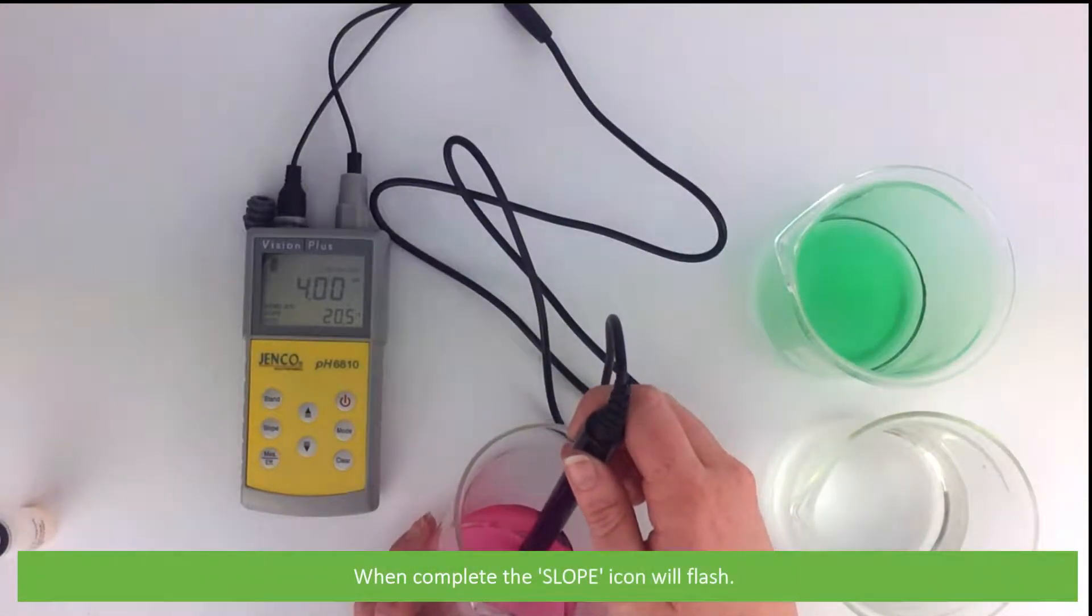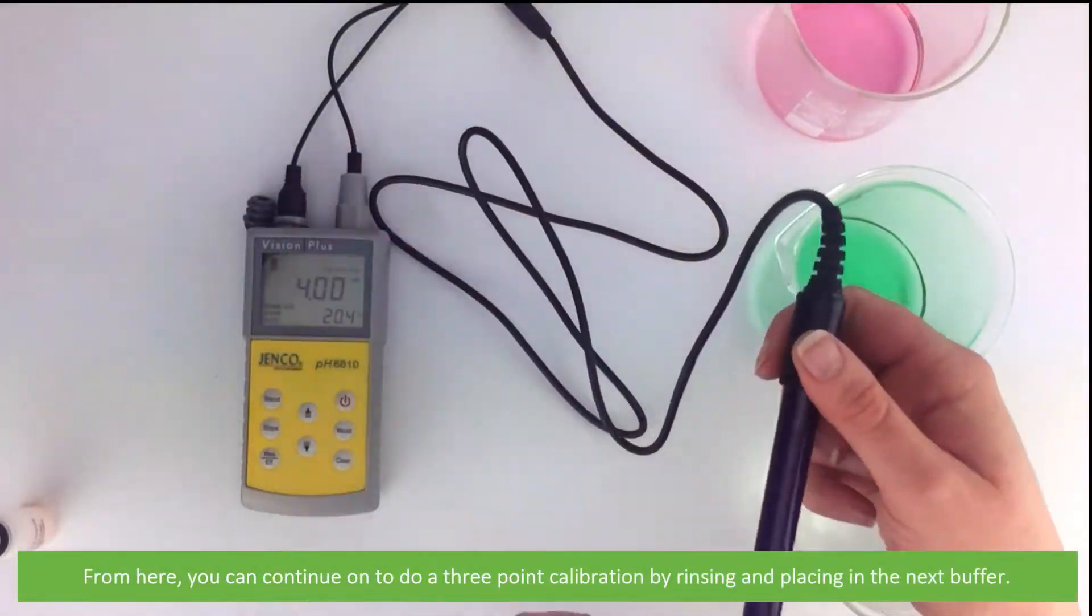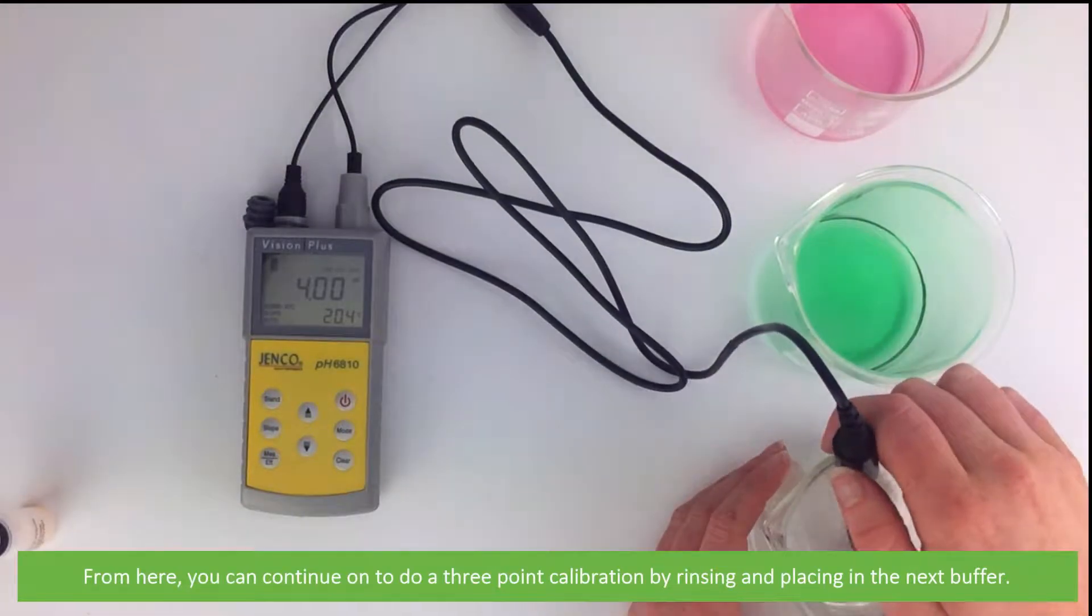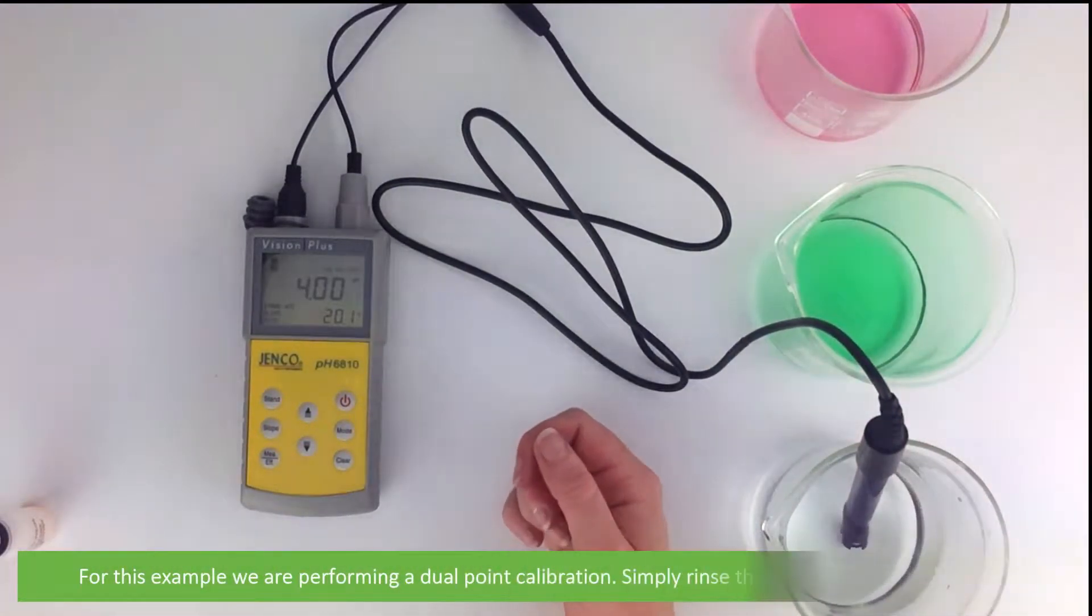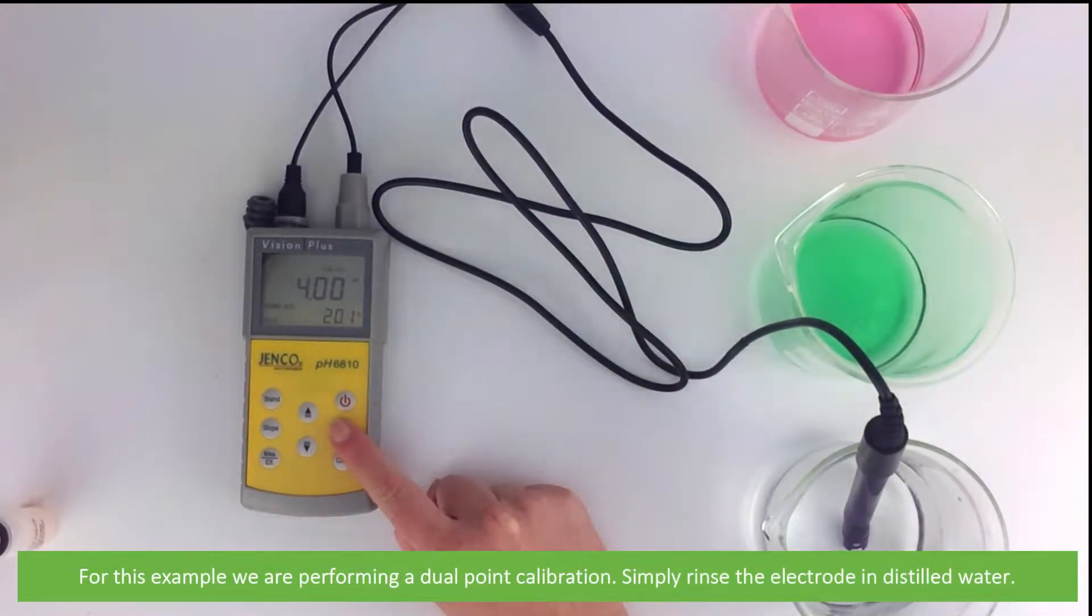When complete, the slope icon will flash. From here you can continue to do a three-point calibration by rinsing and placing in the next buffer, but for this example we are performing a dual-point calibration.